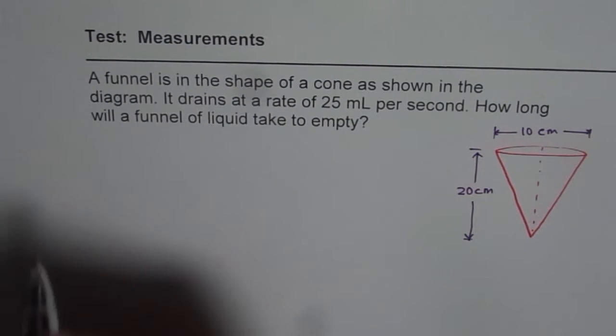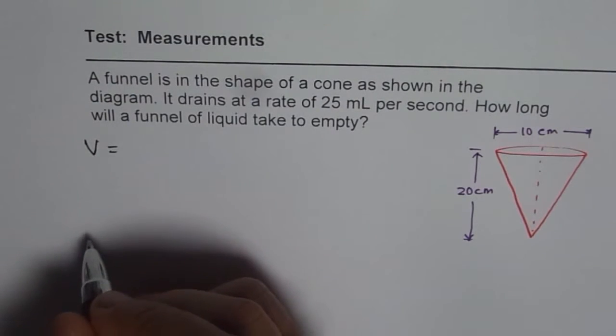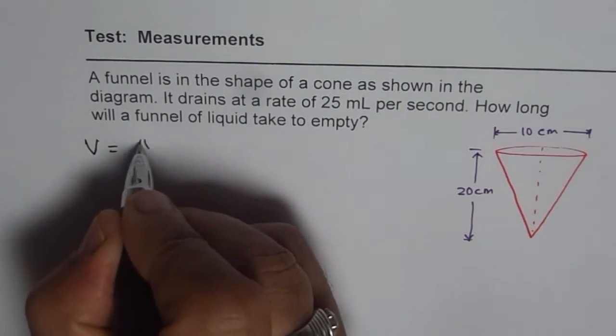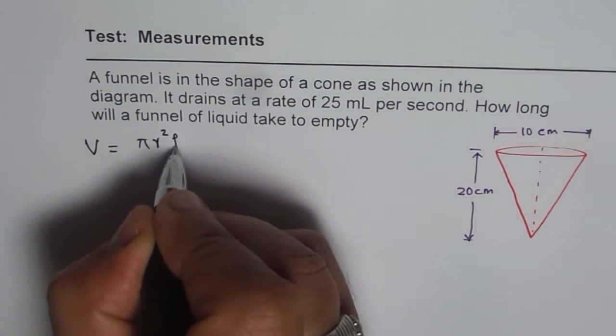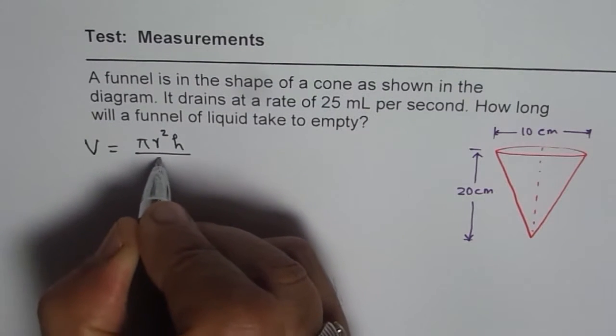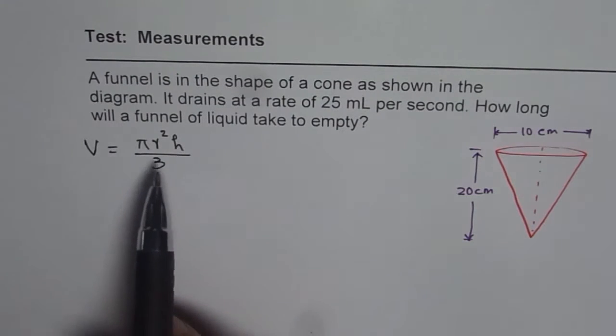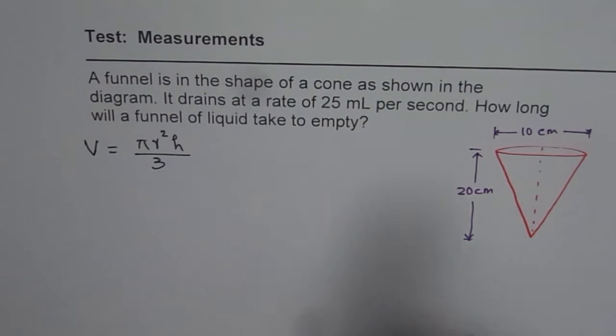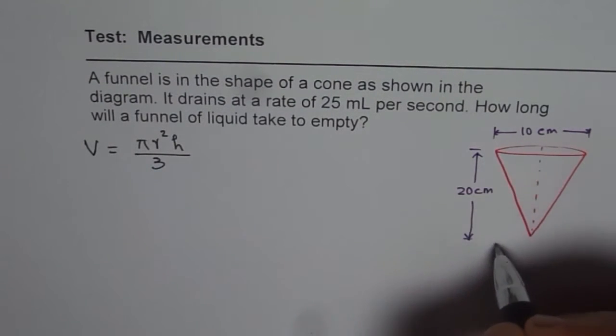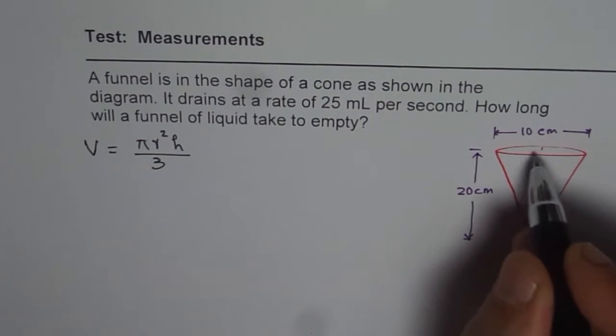To find the volume we should know the volume formula which is πr²h/3. One third of the volume of an equivalent cylinder. So if you have a cylinder which is πr²h, you can fit in 3 cones.